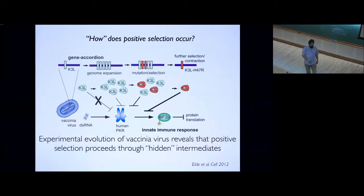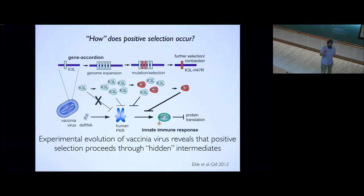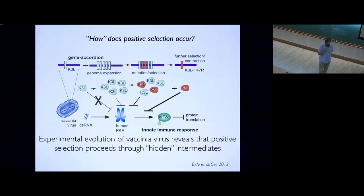We know it's less than six passages, but we don't really know how many generations of viral replication make up one plaque. If you wanted a ballpark estimate, that's less than 600 generations of the virus. The initial accordion arose by passage six — so the initial accordion we could detect was about 600 generations.